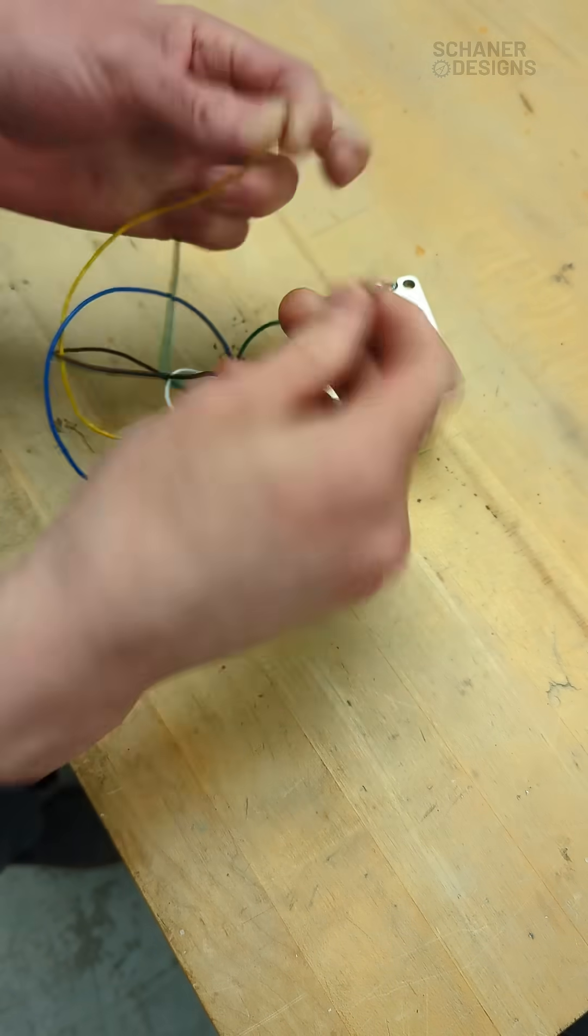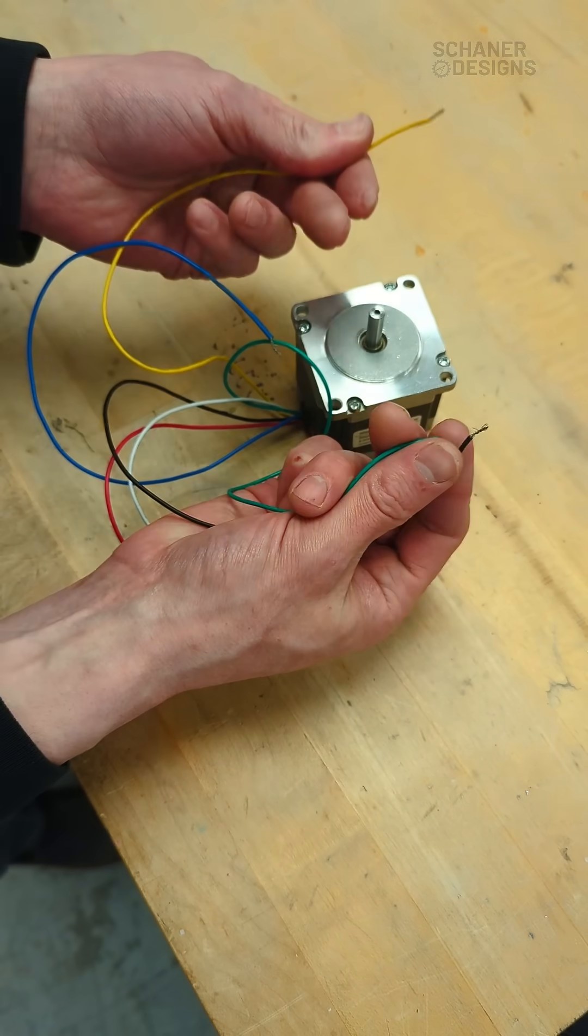So my guess is that black and green are the ends of the coil and then the yellow is the center tap.